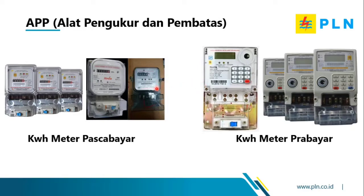Perbedaan secara fisik: pada pasca bayar hanya menampilkan angka stand saja, dan pembatasnya ada di MCB. Sedangkan pada KWH meter prabayar atau listrik prabayar LPB, selain muncul sisa KWH, yang paling utama dapat kita kenali adalah adanya keypad atau tombol angka — angka 1–9, beserta angka 0 dan tombol enter atau OK. Inilah perbedaan mendasar antara keduanya.